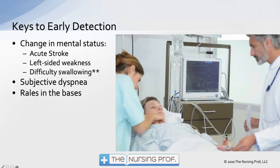Our keys to early detection will be to look for patients who have a change in mental status — patients, for example in this case, with an acute stroke, left-sided weakness, difficulty swallowing, and subjective dyspnea. Then rales in the bases. In this case we had rales scattered throughout the lungs, so we're not going to rule out aspiration because of that, especially since we have that acute change in mental status.